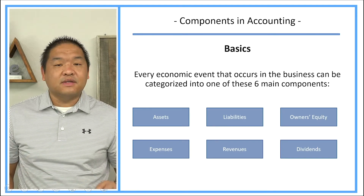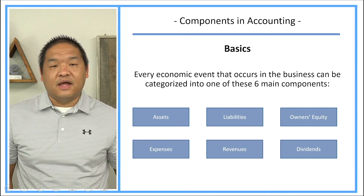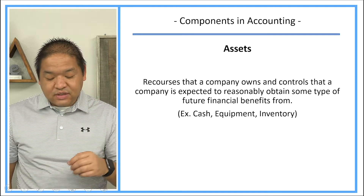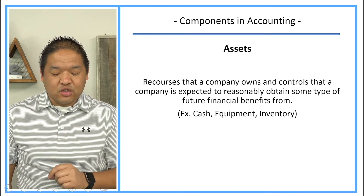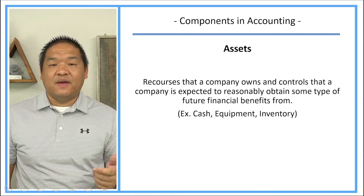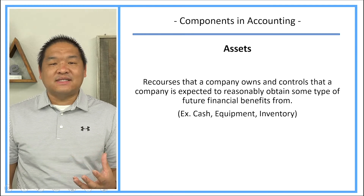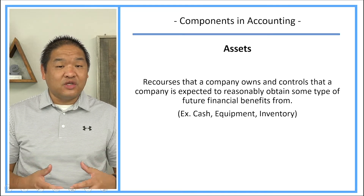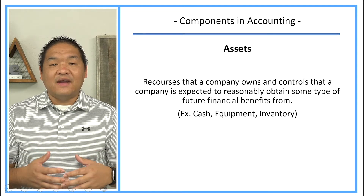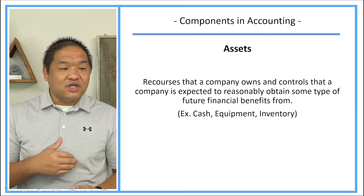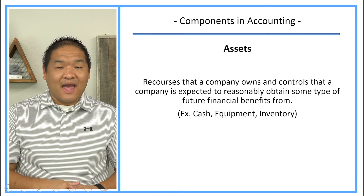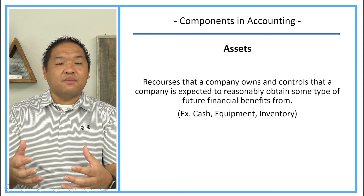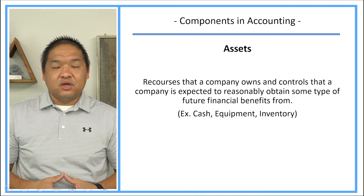Let's talk about each one of these buckets so that you understand the terminology from an accounting standpoint. The first one is assets — these are resources that a company owns or controls that a company is expected to reasonably obtain some type of future financial benefit from. Examples of assets are cash, equipment, and inventory. Cash is a resource that a company has, and we expect the company to deploy that cash to provide future financial benefits to the organization.